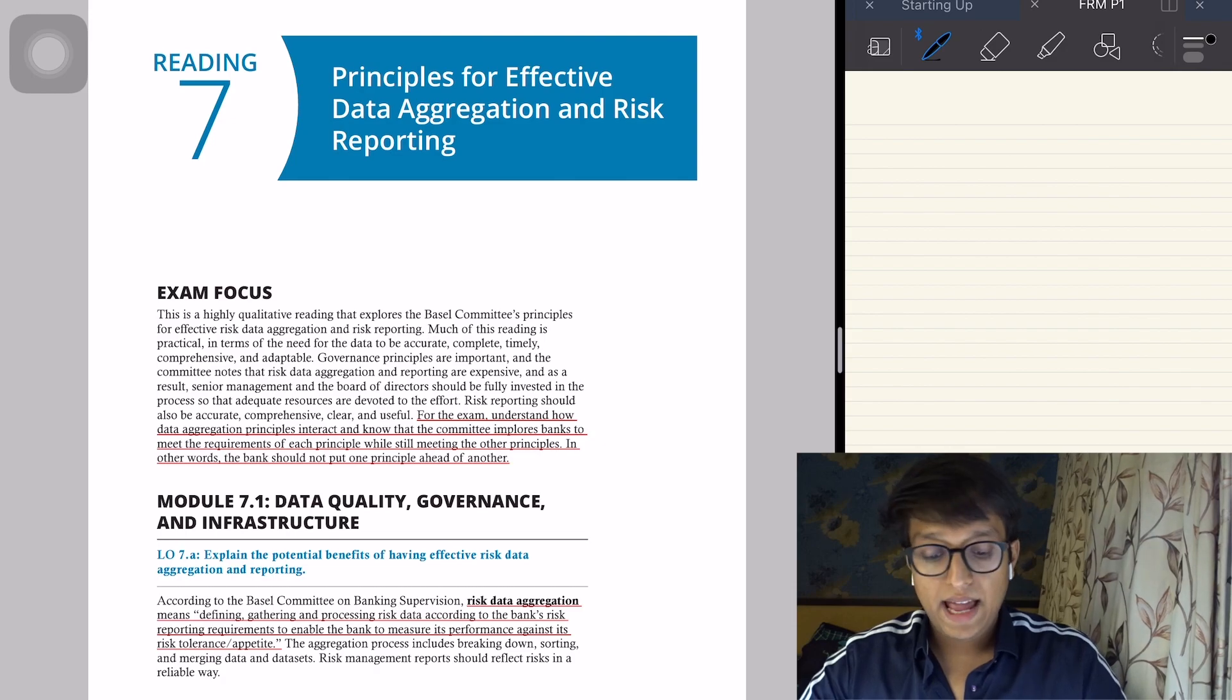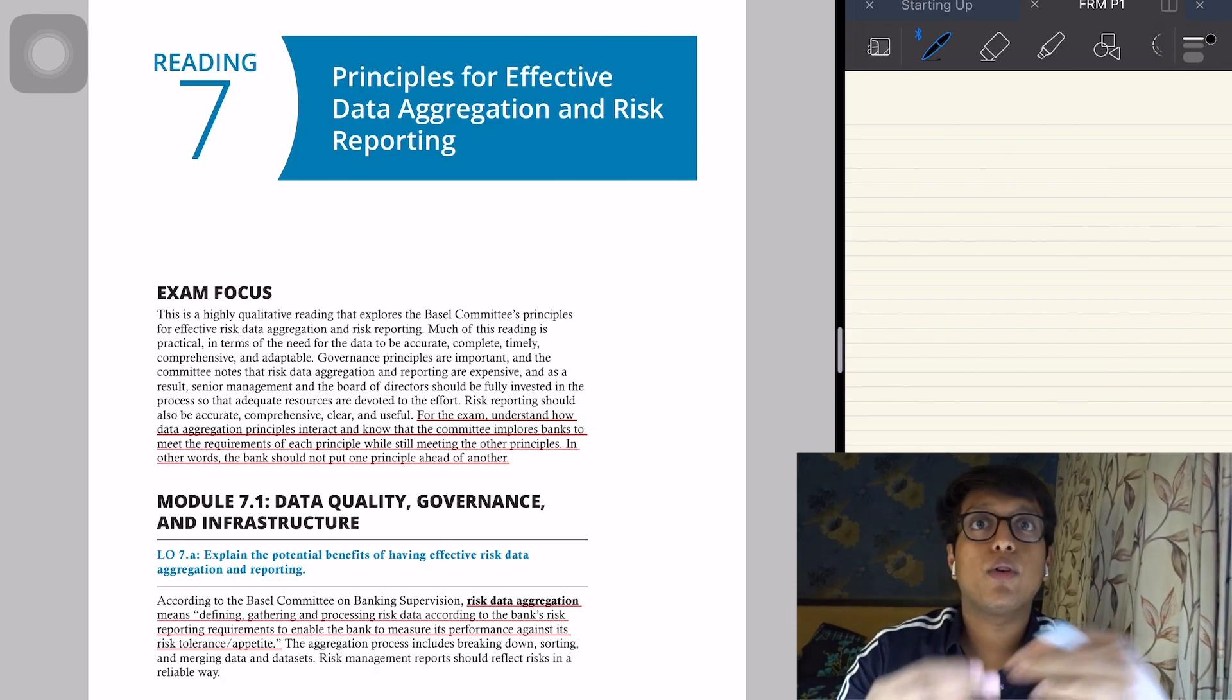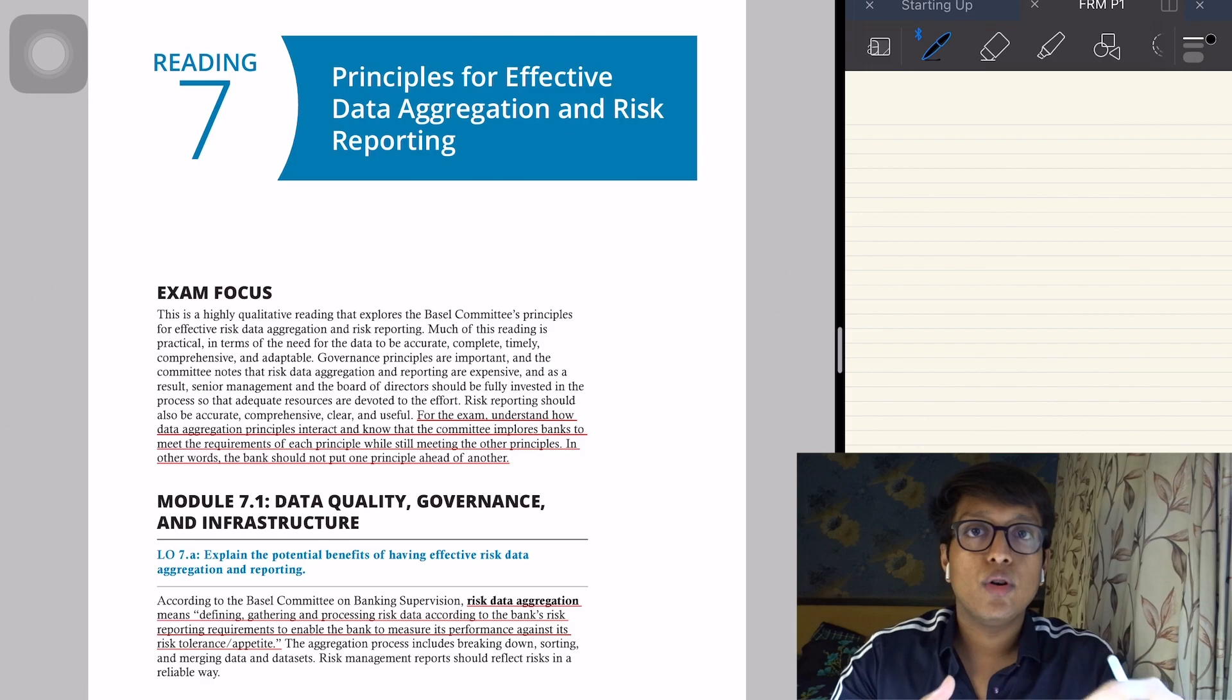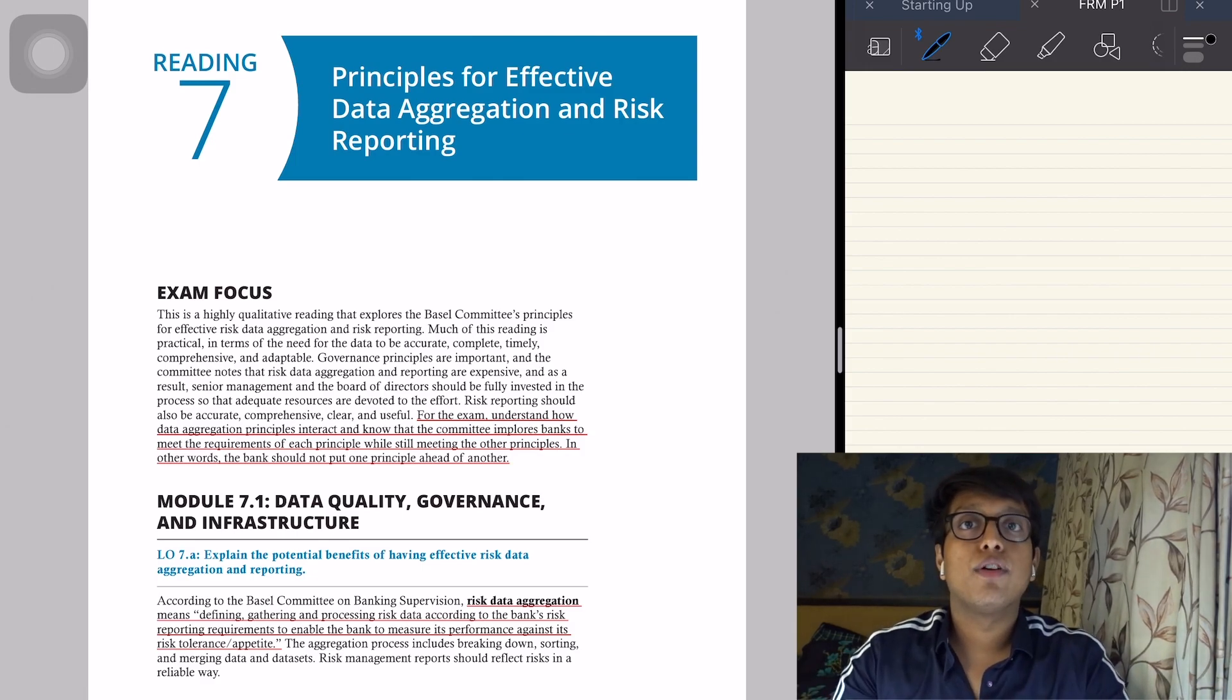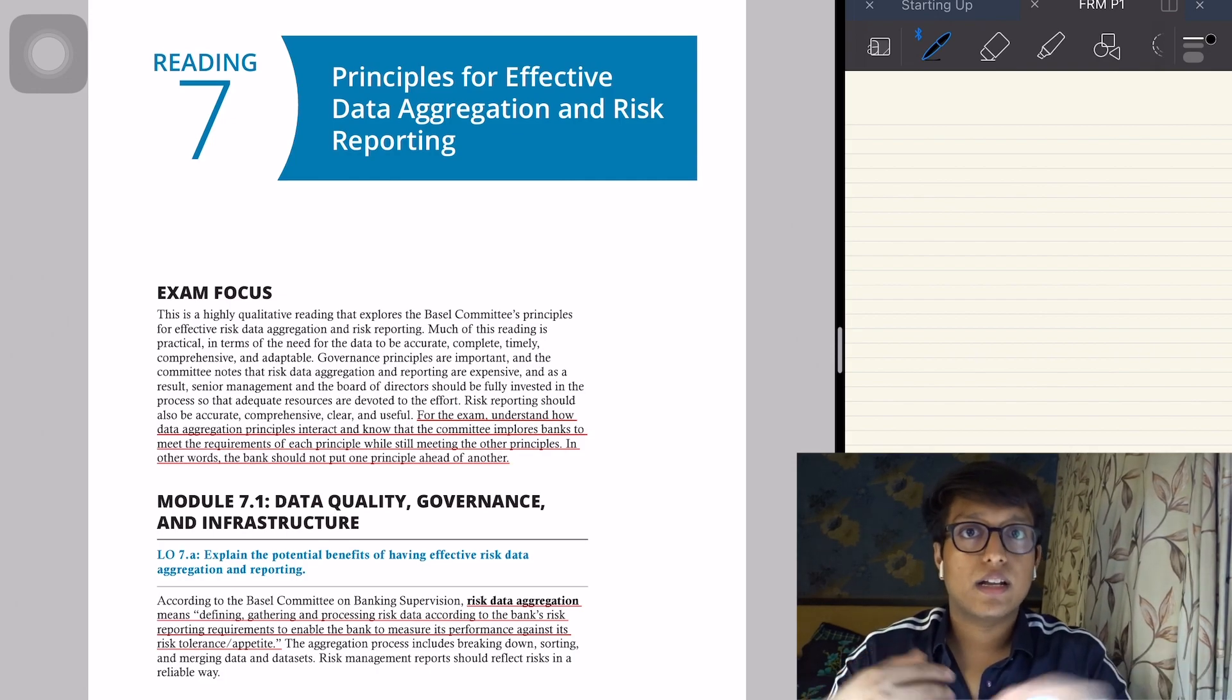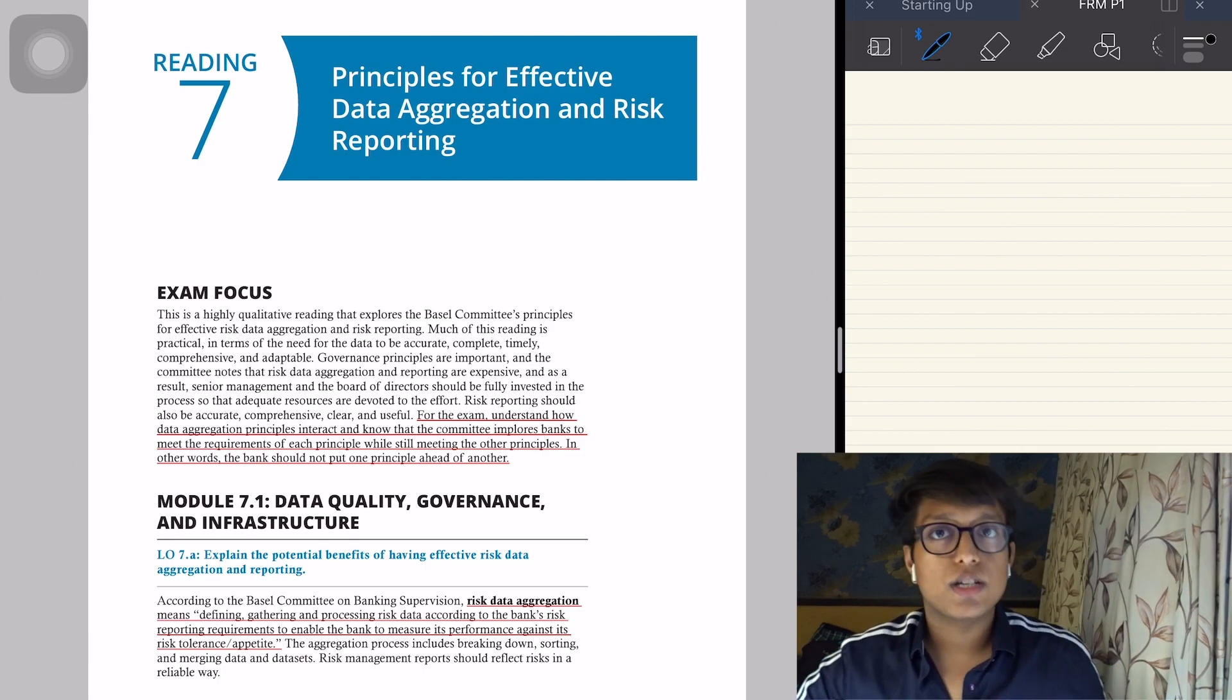This talks about data aggregation and risk reporting. There are some reporting standards that banks need to follow so that there is parity maintained and some level of reduction in the level of risk that comes from such reporting.